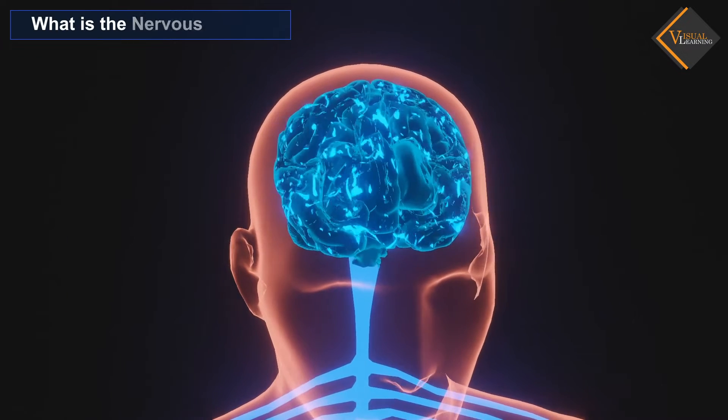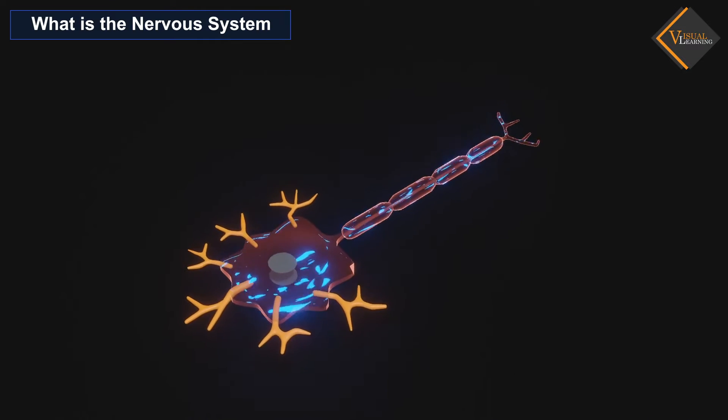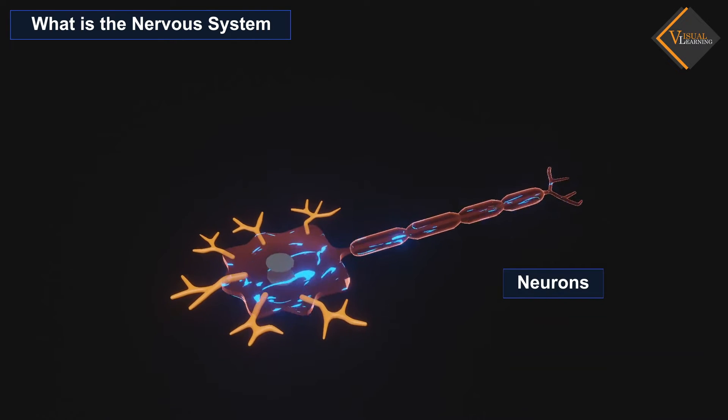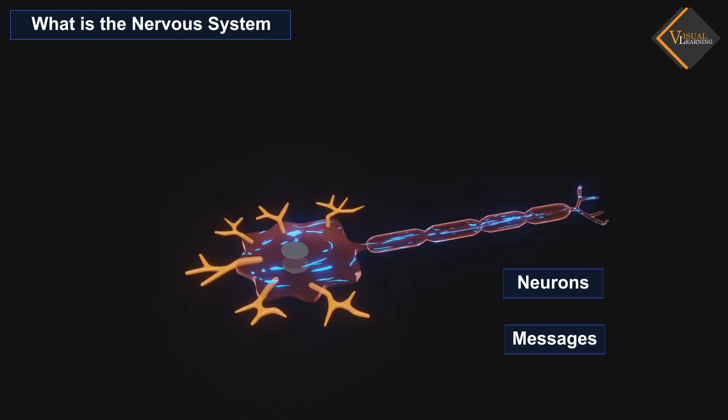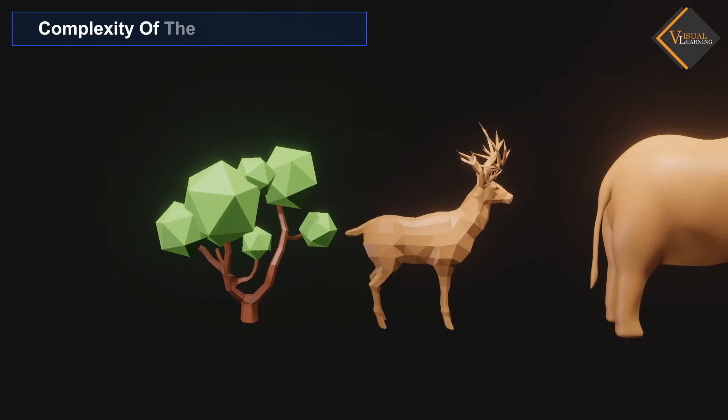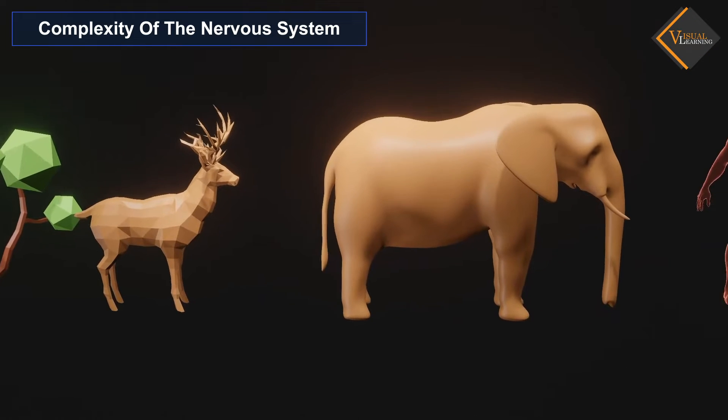What is the nervous system? The nervous system, or the neural system, is a complex network of neurons specialized to carry messages. The complexity of the nervous system increases as we move towards higher animals.